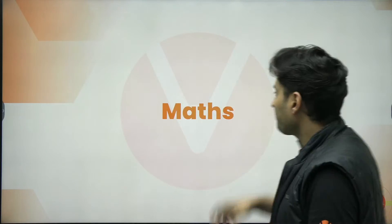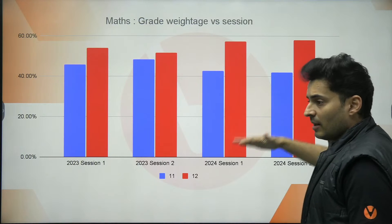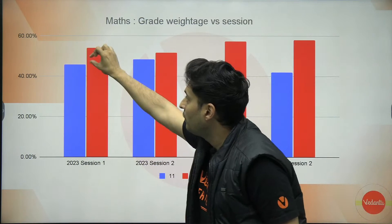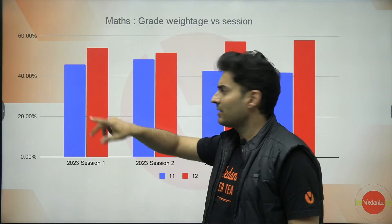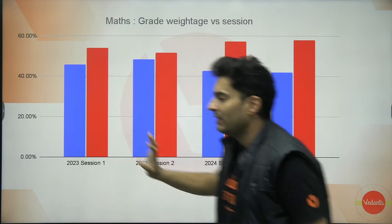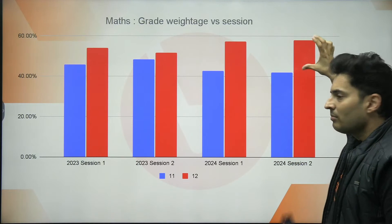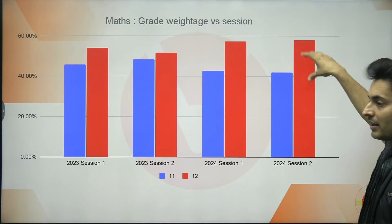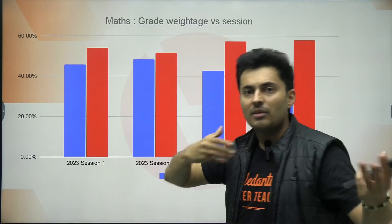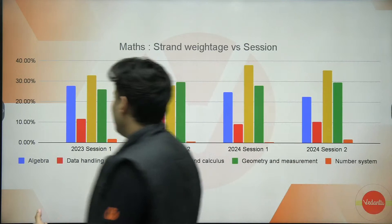Moving on to mathematics. Again, the percentage of 12th standard content is higher compared to 11th, and especially in session one the difference is greater compared to session two — a similar trend to chemistry but not seen in physics. So more of 12th content is asked in session one. However, you cannot rely on this pattern every year, as the gap has varied — sometimes less, sometimes more.